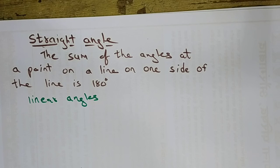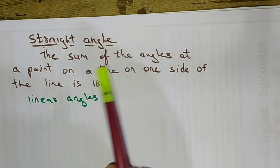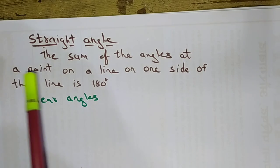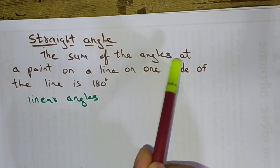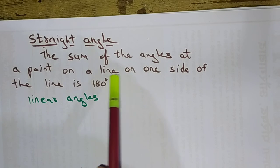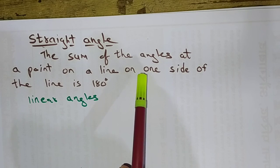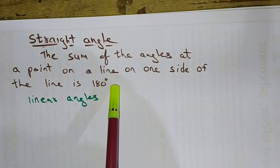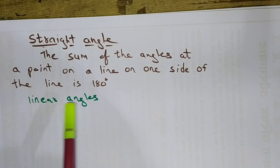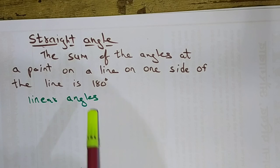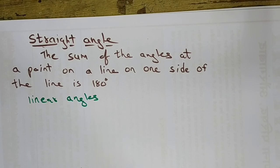Let us study about the straight angle. The straight angle has the property that the sum of the angles at a point on a straight line, on one side of the line, is always 180 degrees. They are also called as linear angles.